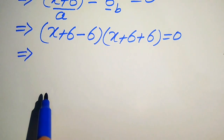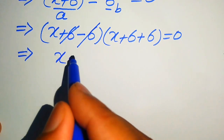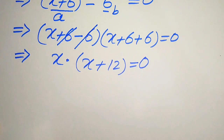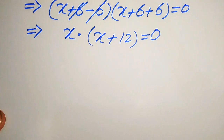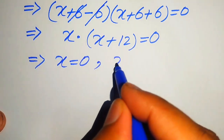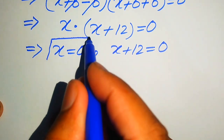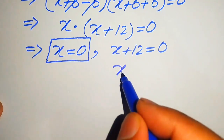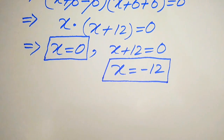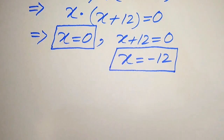We add and subtract like terms: the -6 and +6 cancel, giving x, and 6 + 6 = 12, so we get x(x + 12) = 0. This gives two cases: x = 0 is the first solution, and x + 12 = 0, so x = -12 is the second solution. These are the two final solutions from Method 1.